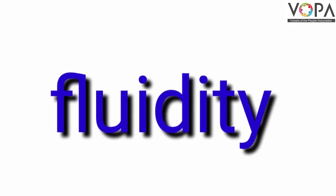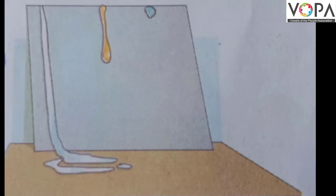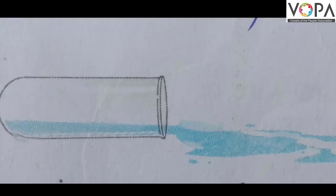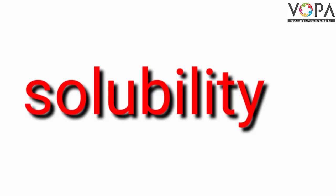Fourth property is fluidity. You know the liquid flows downward on a sloping surface. This property is called fluidity. The fluidity of any liquid is determined by how easily it flows.